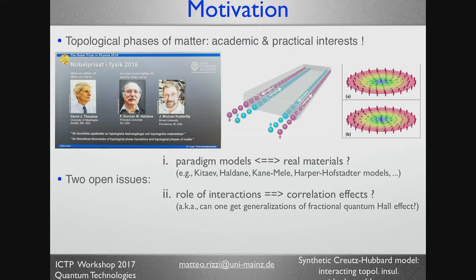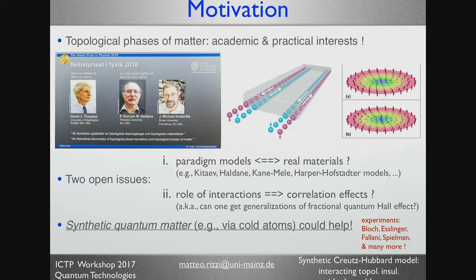So there are studies showing that some compounds that are called iridates might be an incarnation of the Kitaev-Heisenberg model, and so on. But of course, they are not as tunable as a quantum platform based on cold atoms could be. On the other side, the role of interaction is often neglected in real materials, but it might lead to new correlation effects or to new phases of matter.